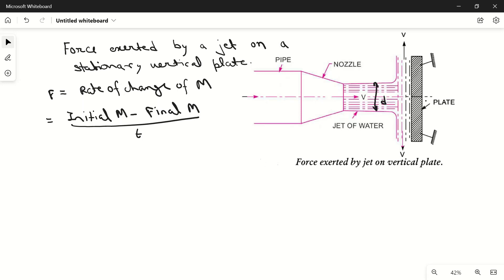What is momentum? We know that momentum m is mass into velocity. So we can say that force is initial mass into velocity m1v1 minus final mass into velocity m2v2 divided by t. But we know that mass of this jet is same, it is not changing, so m1 is equal to m2 is equal to m.